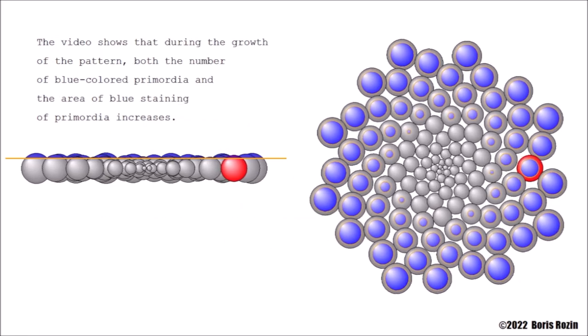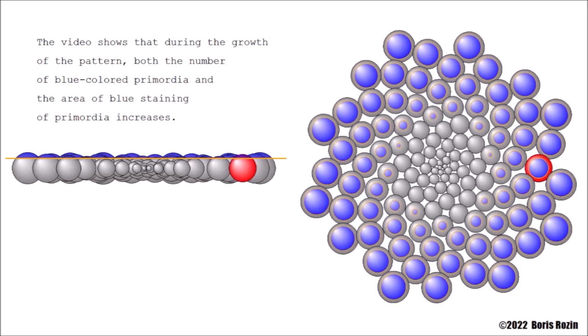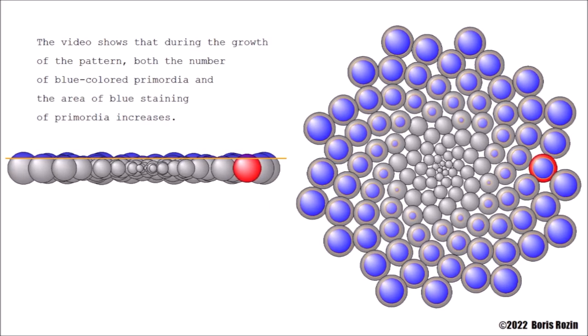The video shows that during the growth of the pattern, both the number of blue colored primordia and the area of blue staining of the primordia increases.